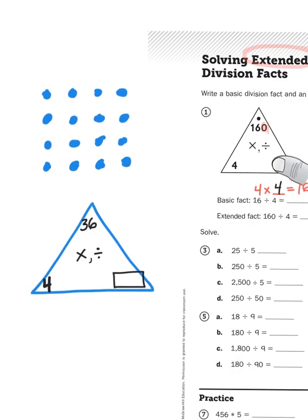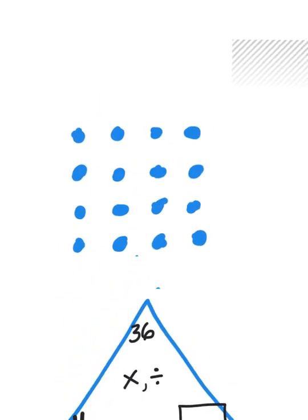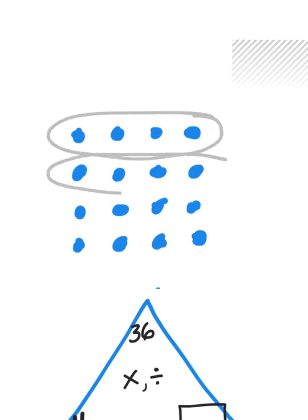Now, when we think about dividing, what we're basically doing is we are taking a number and then we're breaking it down into smaller groups, like so. So I have 16 dots here, and I can divide them into 4 groups, like so.